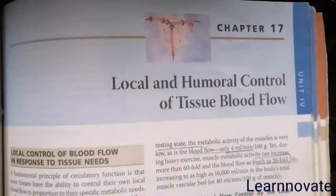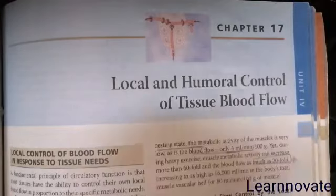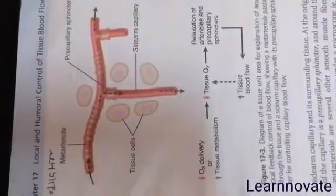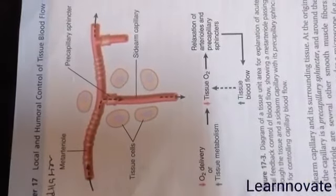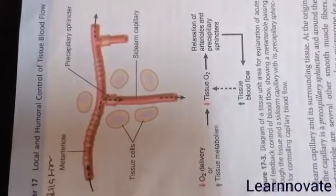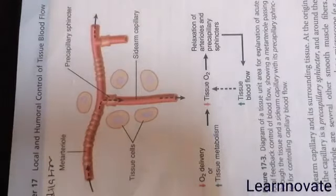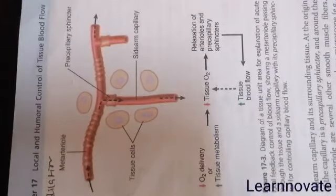In this we are going to discuss the oxygen demand theory and the vasodilator theory. The first diagram we have is the oxygen demand theory. The oxygen demand theory explains the amount of oxygen that is needed by our tissue, so the tissue need involves an oxygen demand.